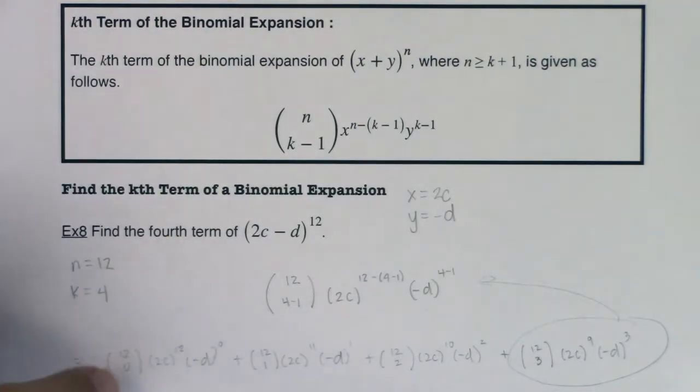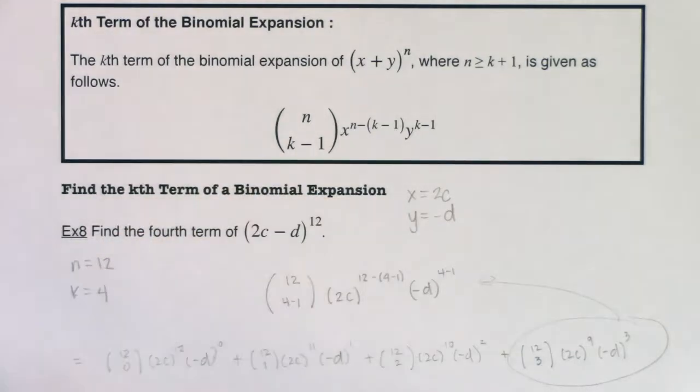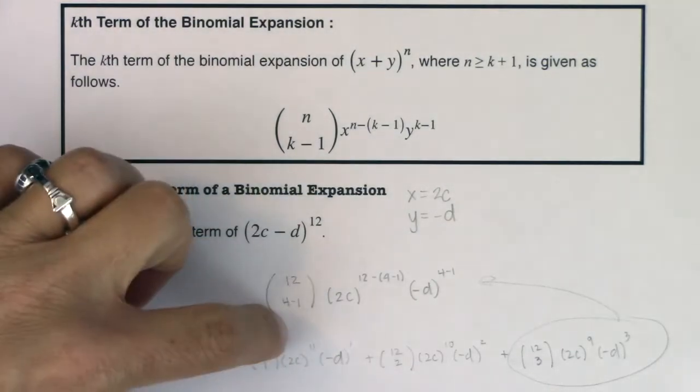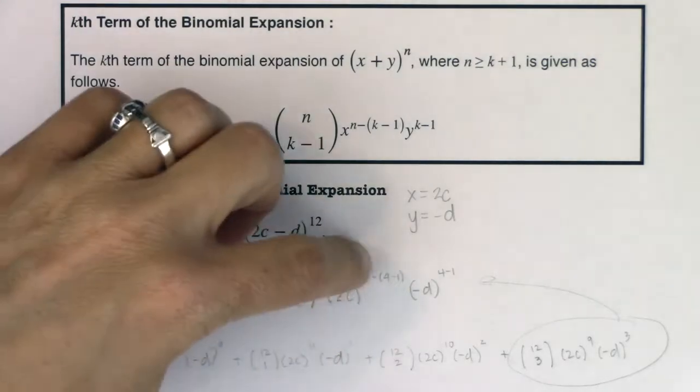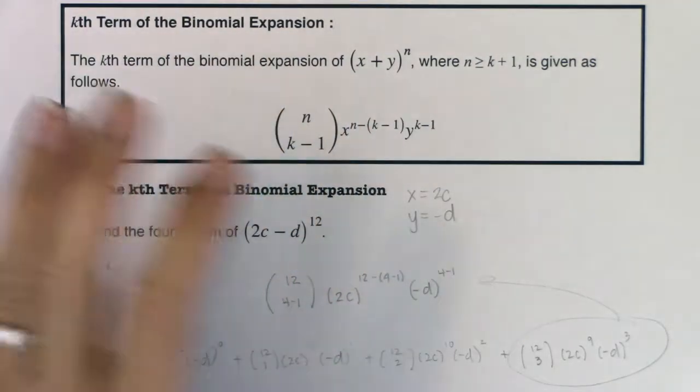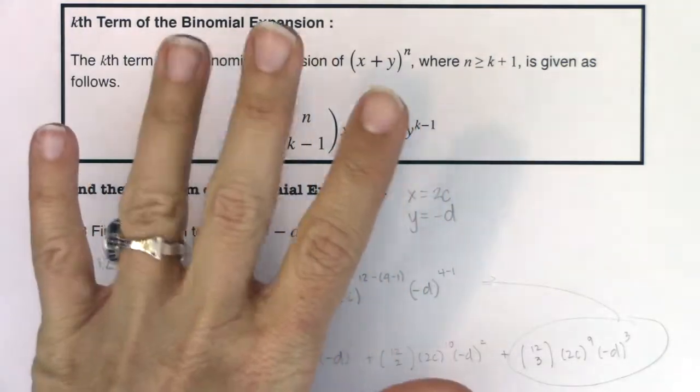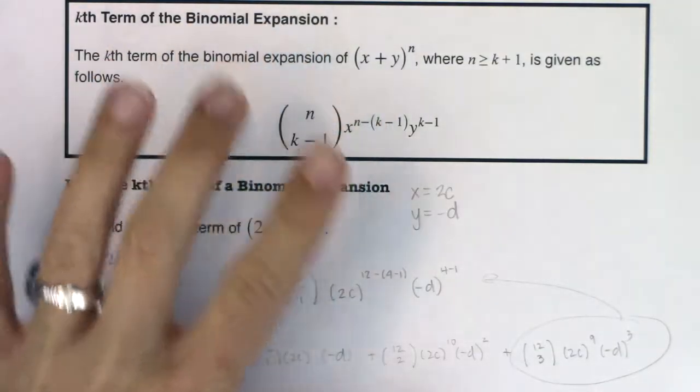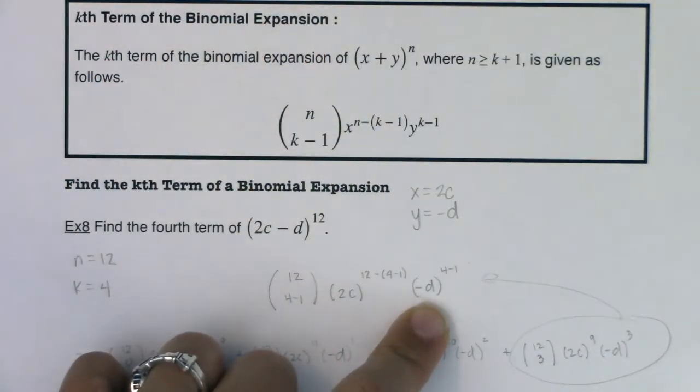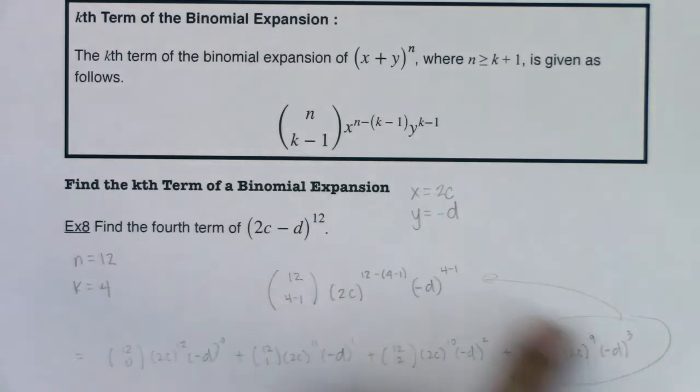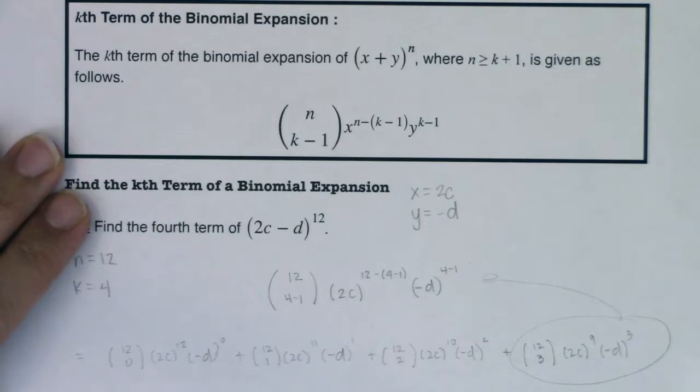All right, but I feel like this formula actually makes it more convoluted than it needs to be. If you want the fourth term, and you know you're going 0, 1, 2, 3 on the choosings of those combinations, this is going to be 12 choose 3. Then it's going to be 2c raised to the 9th power, because if it's the fourth term, your powers went 12, 11, 10, 9, right? And then this has got to be whatever else adds up to 12. If this is 9, that's got to be 3. All right, so with all of that, let me erase this, and then we're going to just simplify the term we have.